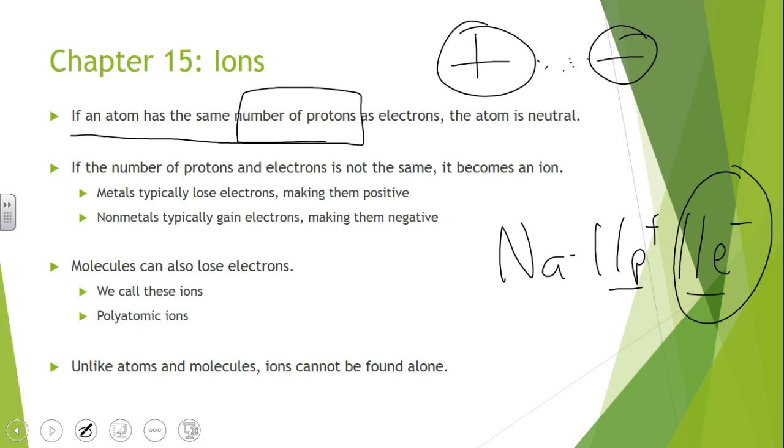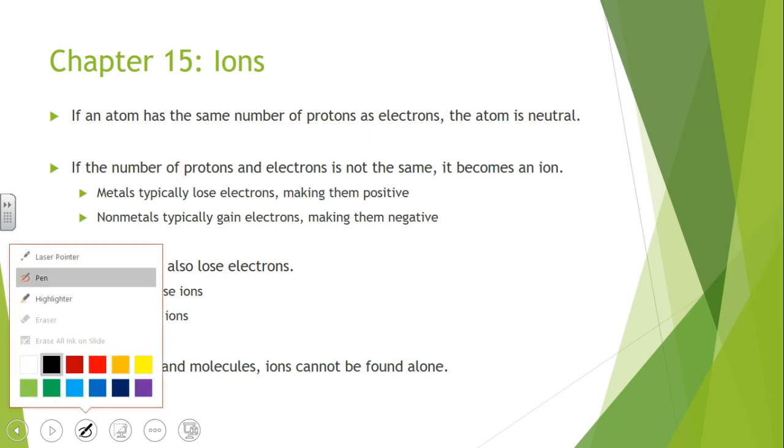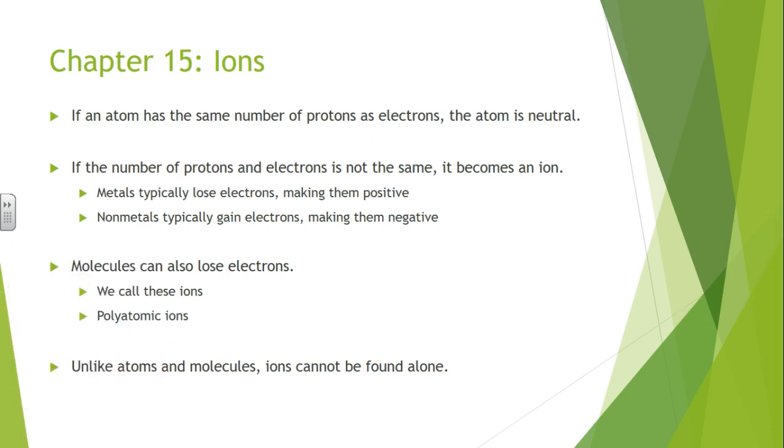So how do these ions form? So let's say we have an element, and we're going to deal with small numbers to make it easier. Let's deal with the element boron. The element boron has five protons. Now if it had five electrons, that means that the overall charge is zero, and it makes it neutral. It has the same number of protons as it has electrons.